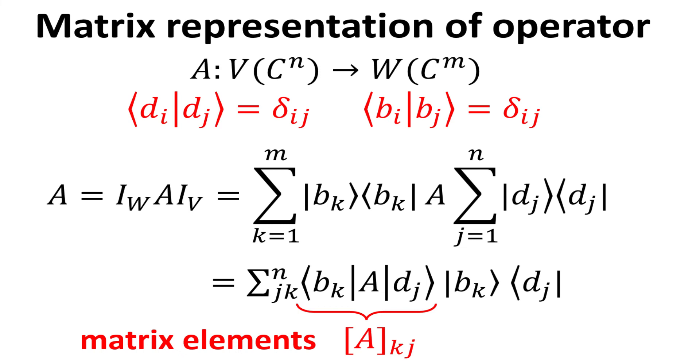We can multiply A on the left and right by the identity matrix, of dimension m by m and n by n respectively. Using the completeness relation, we can write the identity in terms of outer products of d kets and b kets. As we shown in previous slide.